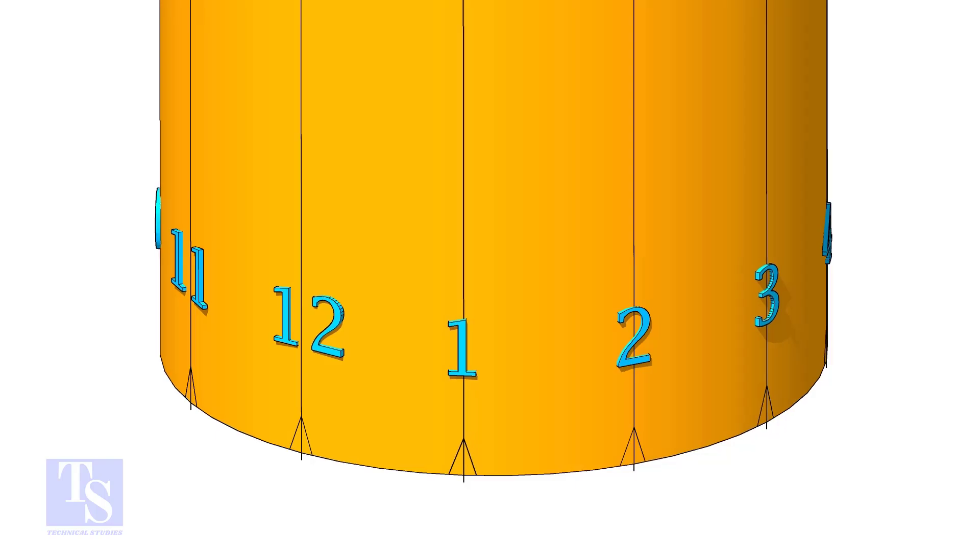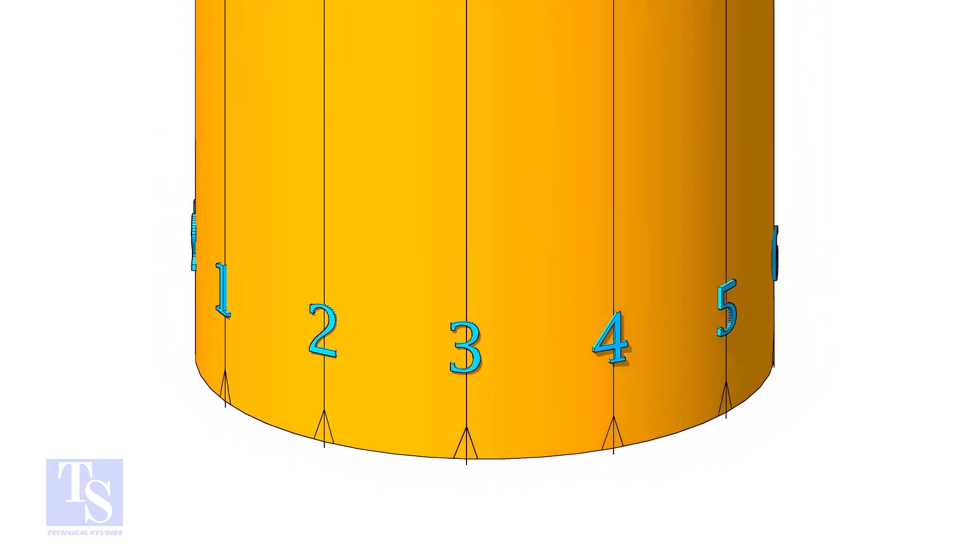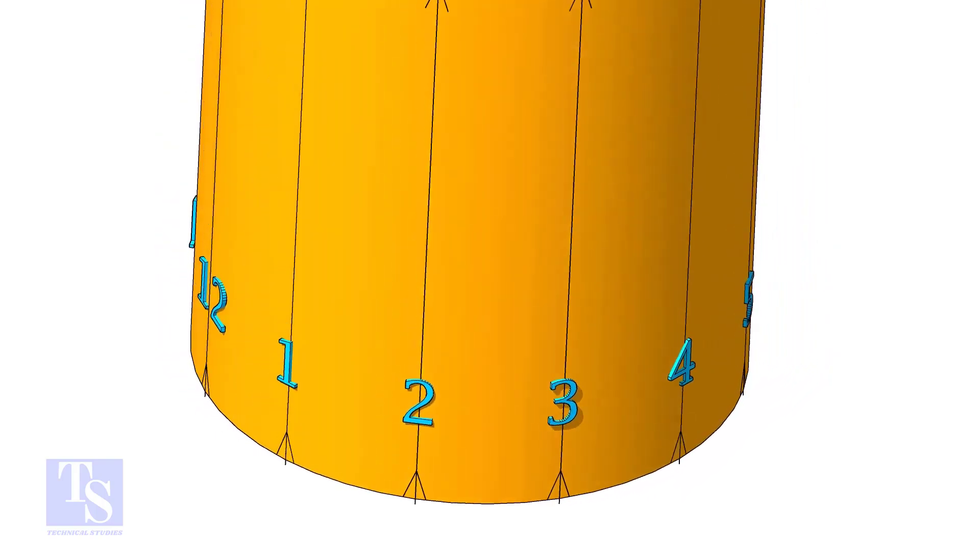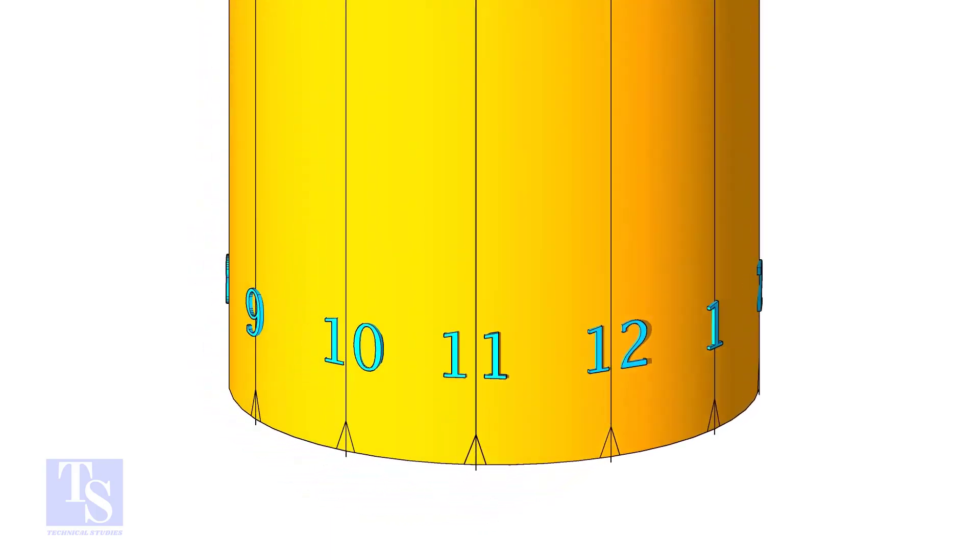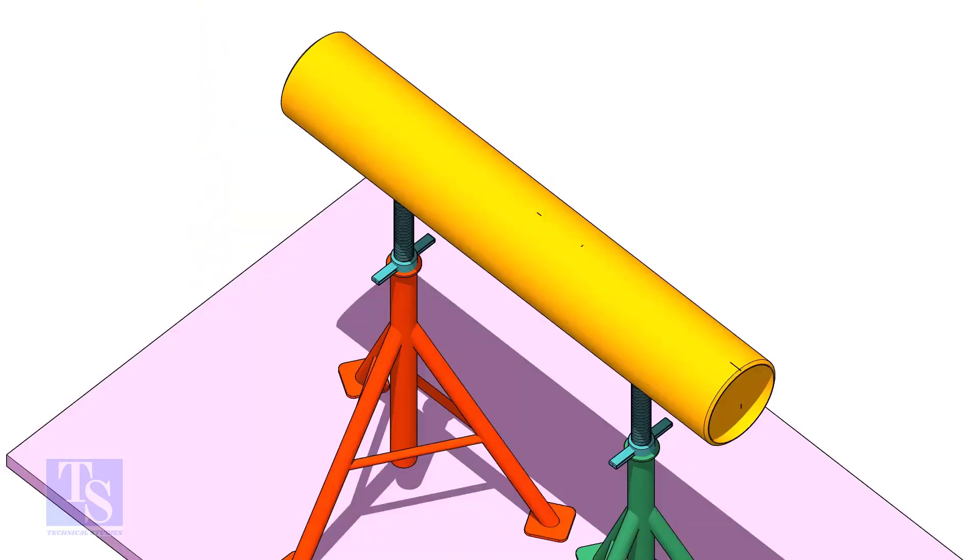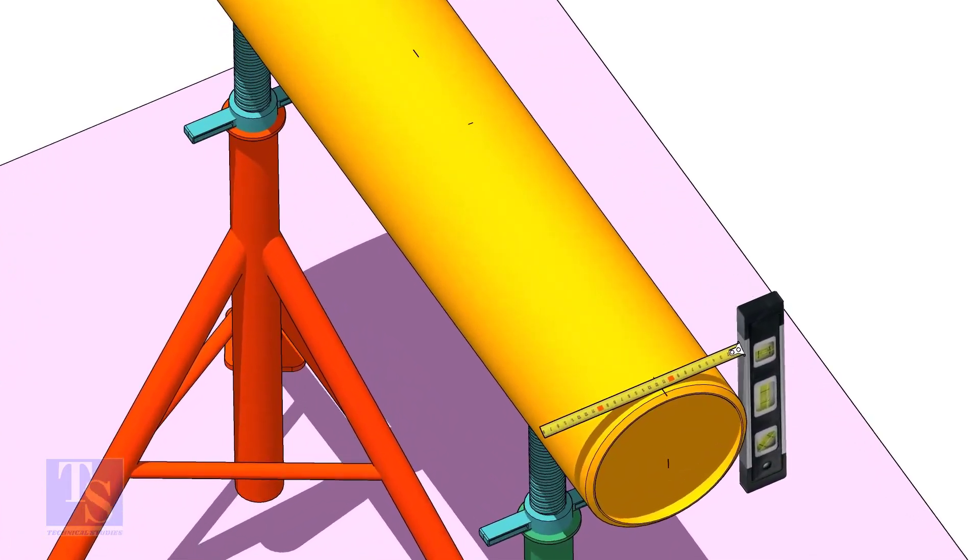Divide the branch pipe into equal parts. In this case, I divide the pipe into 12 parts. Mark the center line of the header on the top and the bottom.